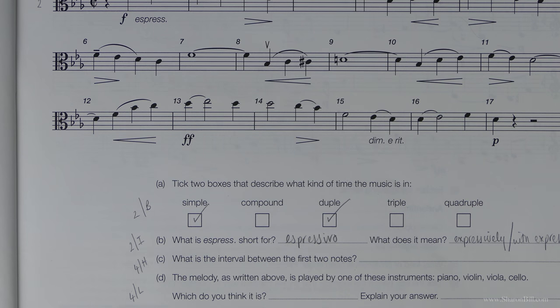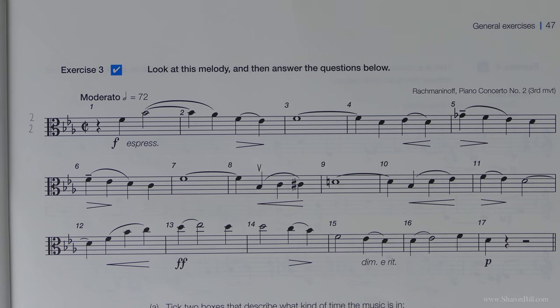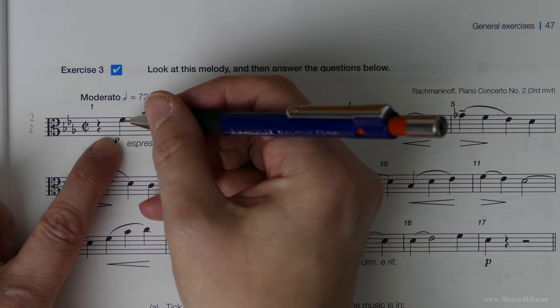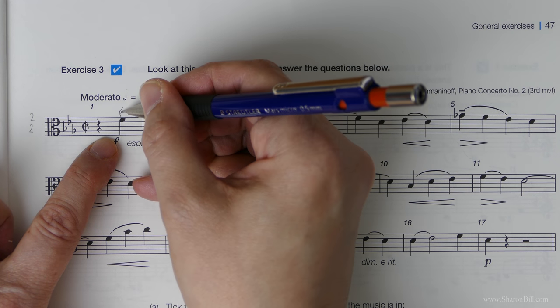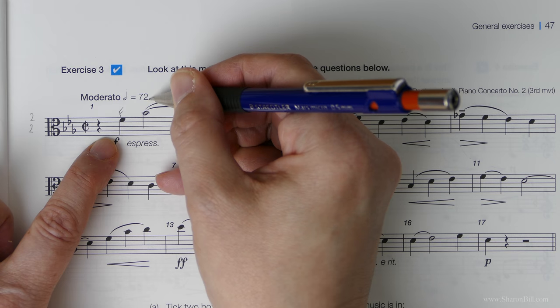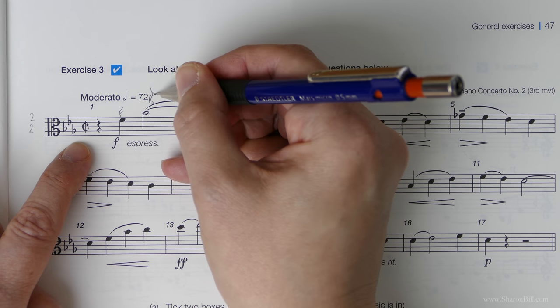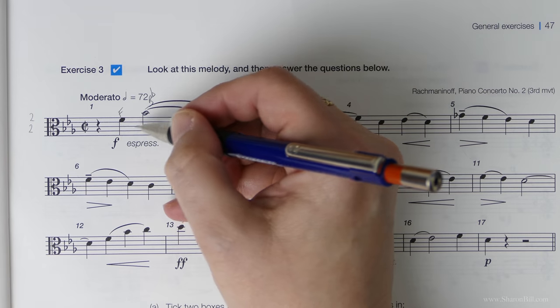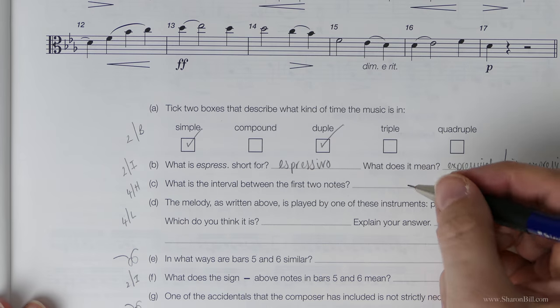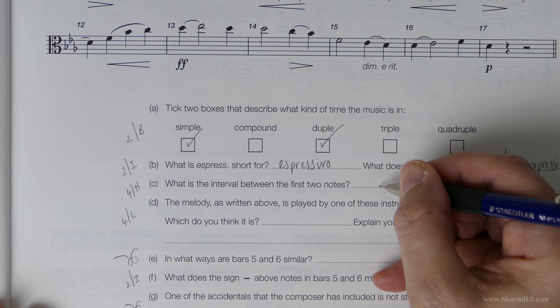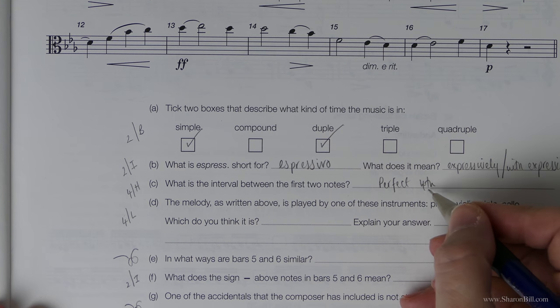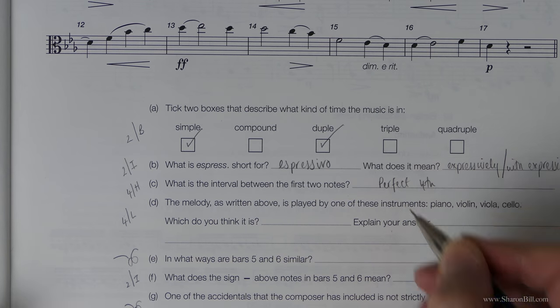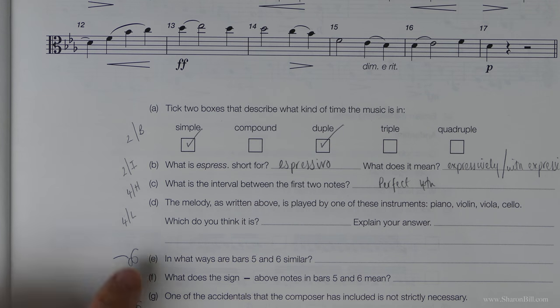What's the interval between the first two notes? We're in alto clef, so we need to figure out what notes they are. C, D, E, that's an F. That's a B - remember it's a B flat because of your key signature. So you've got F to B flat, which is a perfect fourth. You need both of those. Just fourth wouldn't do now. We need to describe it fully.